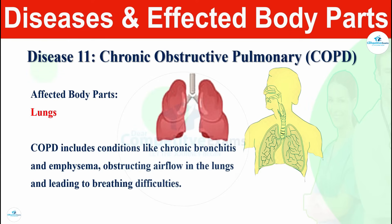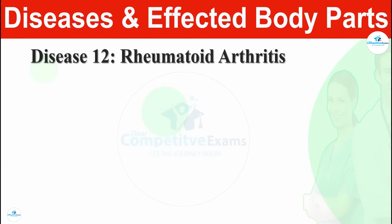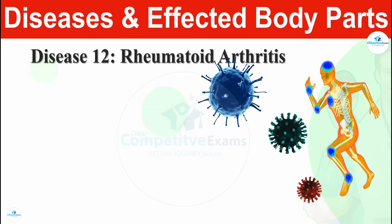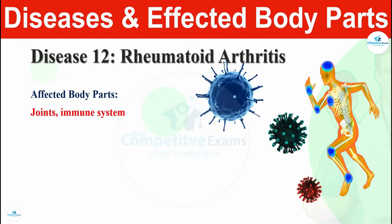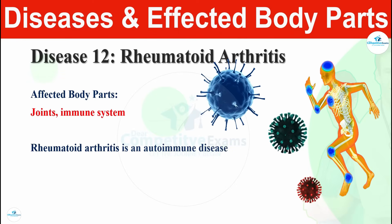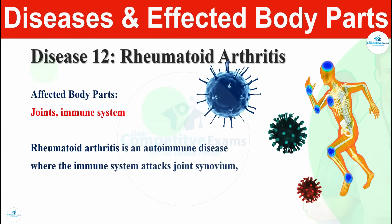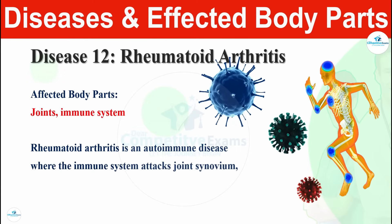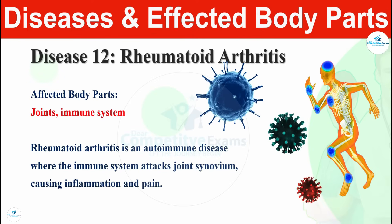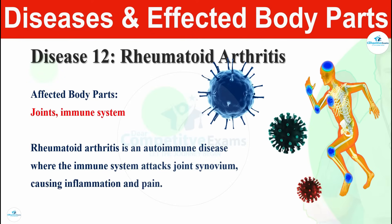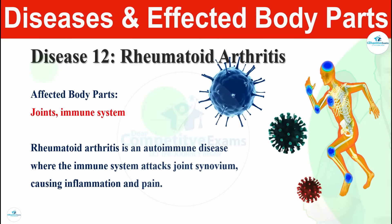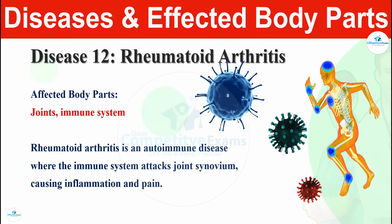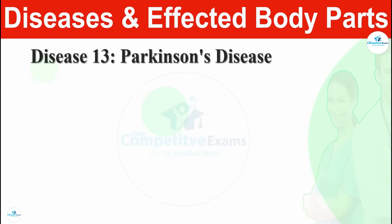Disease number twelve is rheumatoid arthritis. Rheumatoid arthritis affects the joints and immune system of the body. It is an autoimmune disease where the immune system attacks joint linings, causing inflammation and pain. Rheumatoid arthritis affects our joints and immune system.